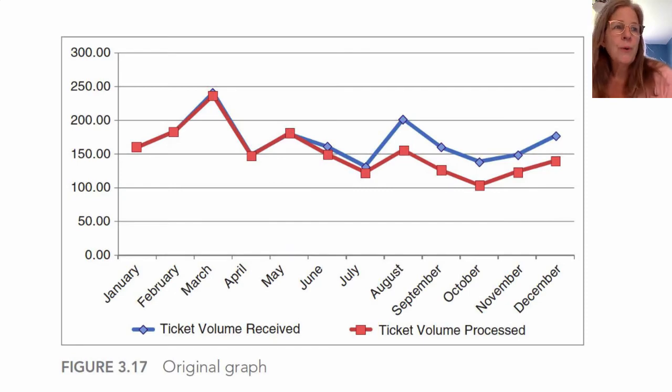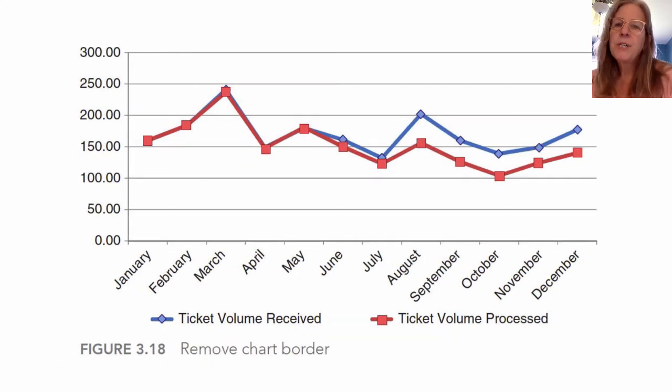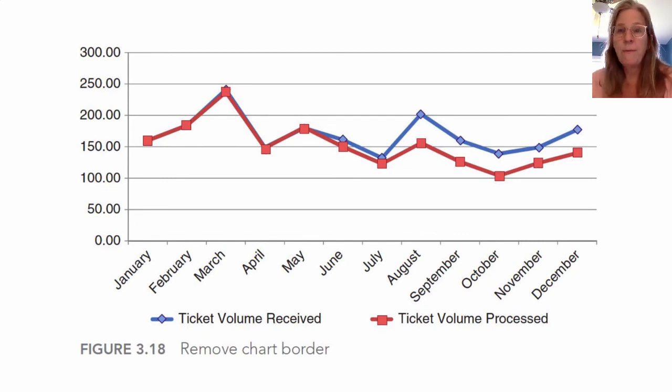Now we're going to go through an exercise of making the chart look better. This is a chart of ticket volume received and ticket volumes processed over time. We're going to look at this and see if there are ways that we can make this look better. The first thing I'm going to do is just take out all the grid lines because we don't need that extra piece of information. So it's a little bit clearer, cleaner to look at.